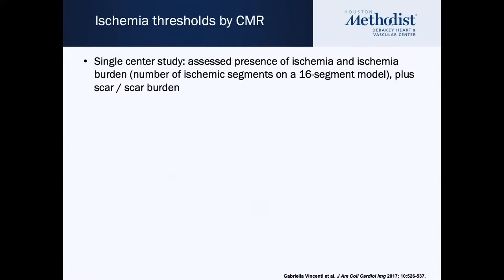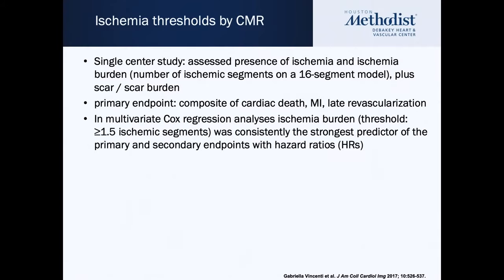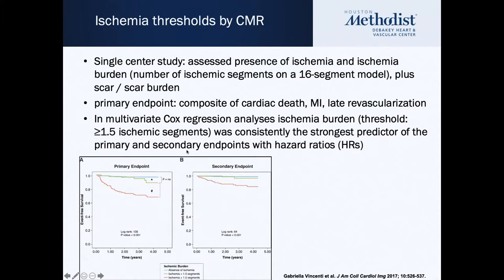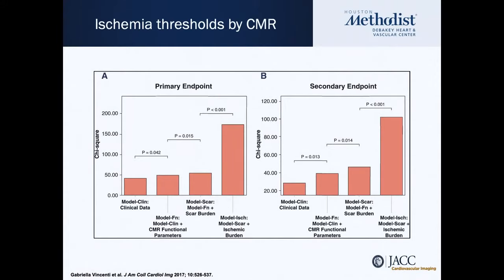We always look at ischemic thresholds with nuclear testing, and we all know the ischemia trial results. In terms of MRI, there was a study that looked at not just the presence of ischemia but also the burden — defined as number of ischemic segments on a 16-segment model. They looked at a primary outcome of death, MI, and revascularization, and found a threshold of 1.5 ischemic segments was a predictor of the primary and secondary event. The model including ischemic burden, scar, and LVEF was superior to looking at scar and LVEF alone without ischemia.